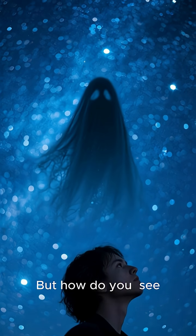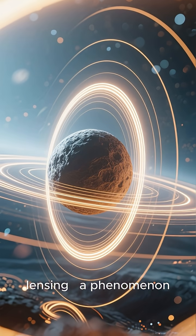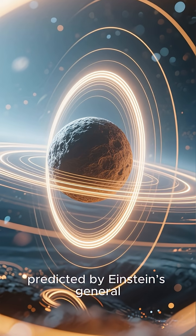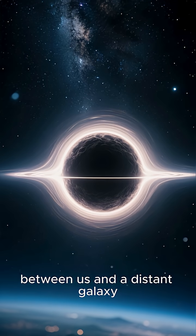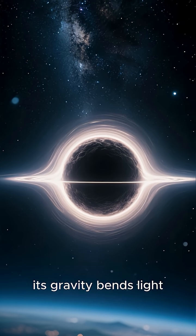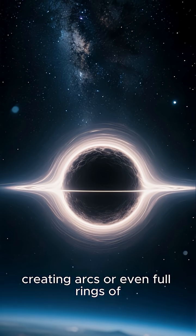But how do you see something that doesn't shine? You use gravitational lensing, a phenomenon predicted by Einstein's general relativity. When a massive object sits between us and a distant galaxy, its gravity bends light, creating arcs or even full rings of light, the famous Einstein rings.